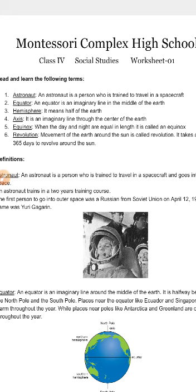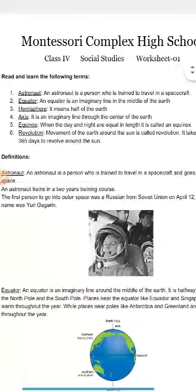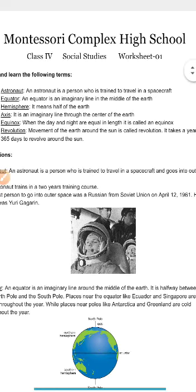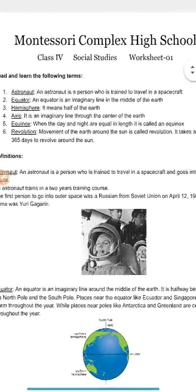The fifth term is equinox — when the day and the night are equal in length, it is called equinox. Usually the day hours are more than the night hours, or sometimes the night hours are more than the day hours, but only twice in a year does it happen that the night and day are both equal, and that is called equinox.